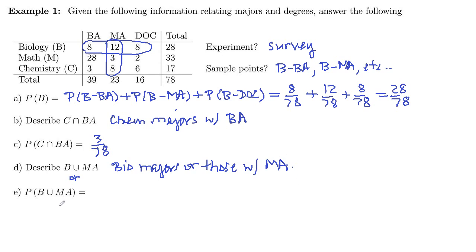And then if we want the probability of that OR, then we're going to need to add those sample points together. And we've got one, two, three, four, five. So five sample points is going to be the 8 out of 78, plus 12 out of 78, plus 8 out of 78. So that gets this top row plus 3 and 8.